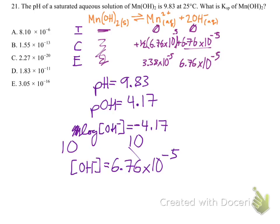So then to find the value of Ksp, all we have to do is write out our equilibrium expression. Ksp equals Mn2+ times hydroxide squared. So our manganese concentration is going to be 3.38 times 10 to the negative fifth. And then we're going to multiply that by our hydroxide concentration, 6.76 times 10 to the negative fifth squared, which means our Ksp is going to equal none other than 1.55 times 10 to the negative 13th.